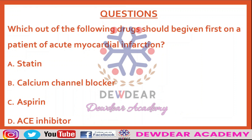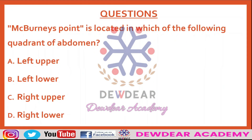Next question: which drug should be given first to a patient of acute myocardial infarction? Options are statin, calcium channel blocker, aspirin, ACE inhibitor. The correct answer is aspirin. All patients with suspected myocardial infarction should be given aspirin, as it is effective in reducing blood clots blocking a coronary artery. Aspirin therapy is a cornerstone in the immediate treatment of MI.